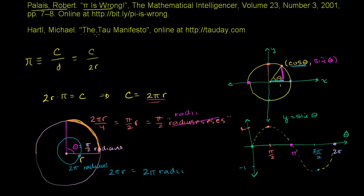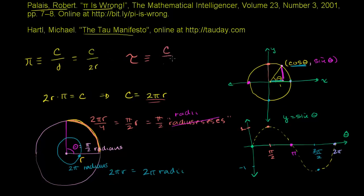Also you have Michael Hartl with the tau manifesto — all of this is available online. What they argue for is a number called tau. It's a very simple change from pi: they define tau not as the ratio of circumference to diameter, but as the ratio of circumference to the radius.